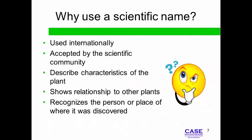Scientific names are recognized throughout the scientific community. These names give clues about other species a plant is related to and describe other characteristics of the plant.